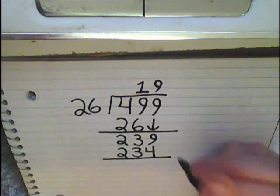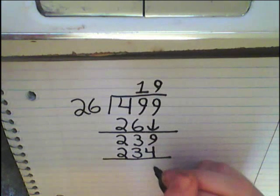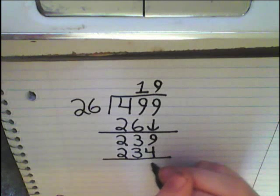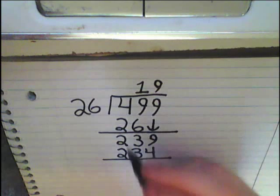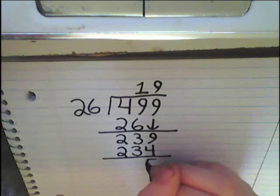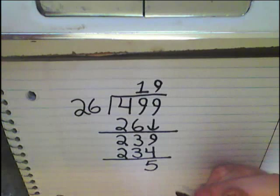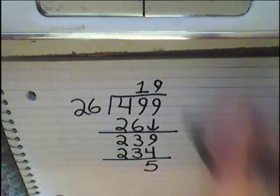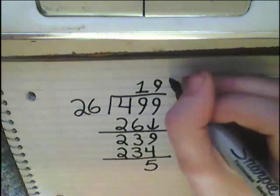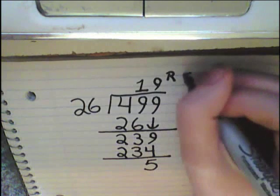Now you subtract 234 from 239. Those digits cancel to zero, so you just have 5, because 9 minus 4 is 5. That leaves you with 19 remainder 5.